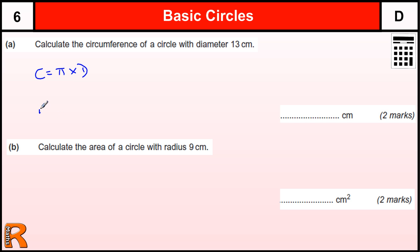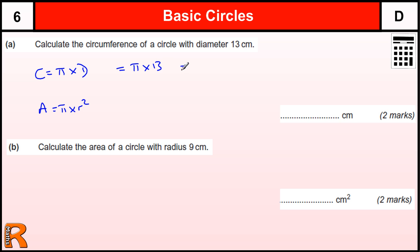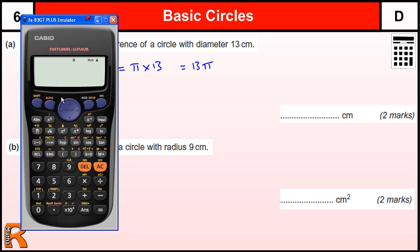We also need to know the area of a circle, which I'm going to use in the second one, is pi times the radius squared, or pi times r times r. Calculate the circumference of the circle with diameter 13, so it's going to be pi times 13, or 13 pi. You can leave your answer as 13 pi — there's nothing wrong with that — you get two marks for that.